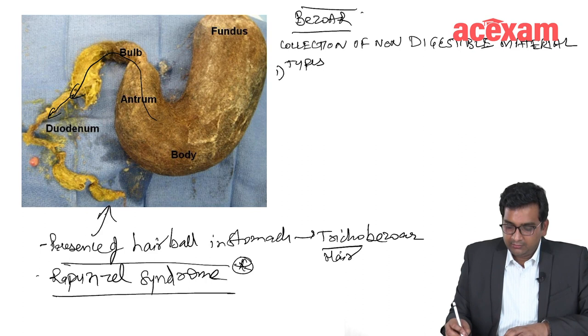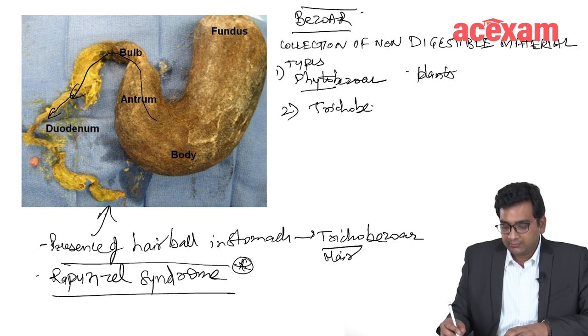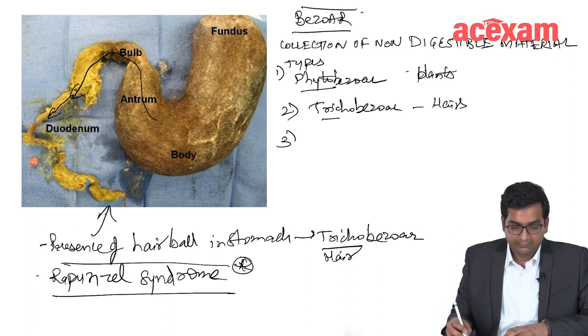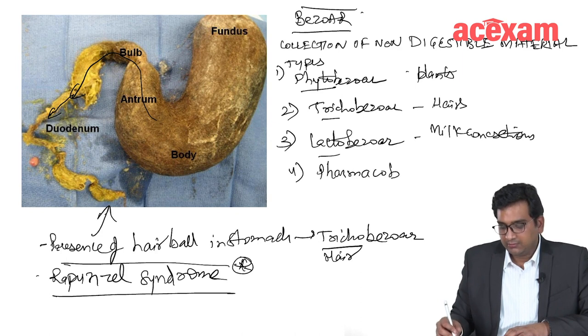The types of bezoar. First is phytobezoar, plants. Second is trichobezoar, hairs. Lactobezoar, milk concretions. And fourth is pharmacobezoar, drugs.